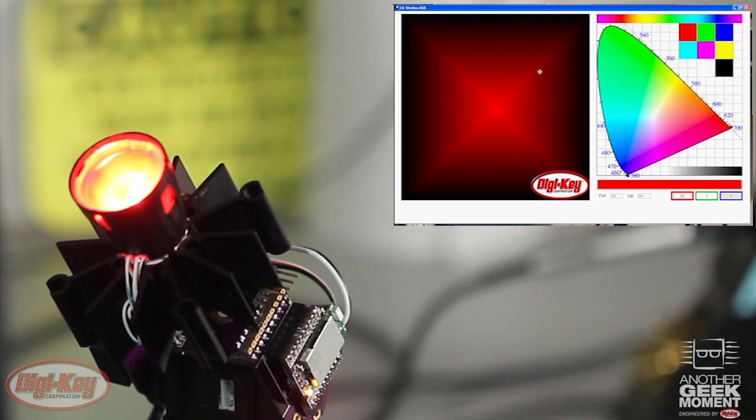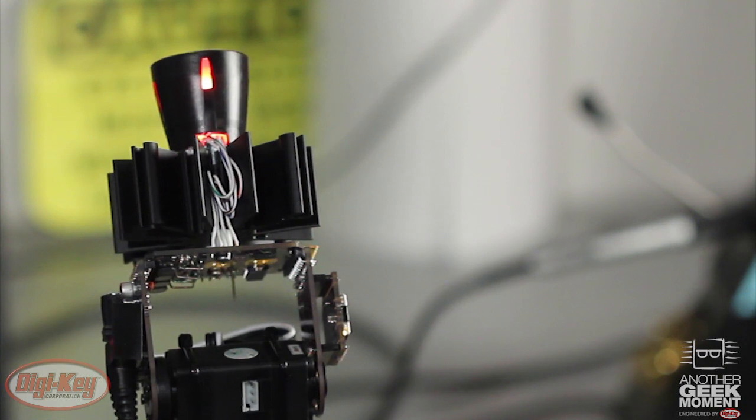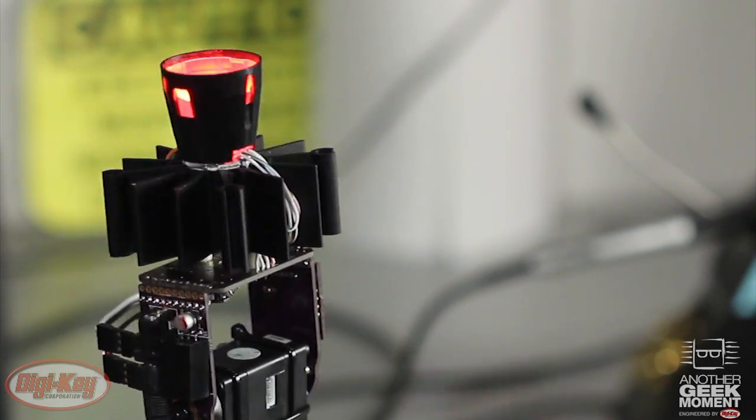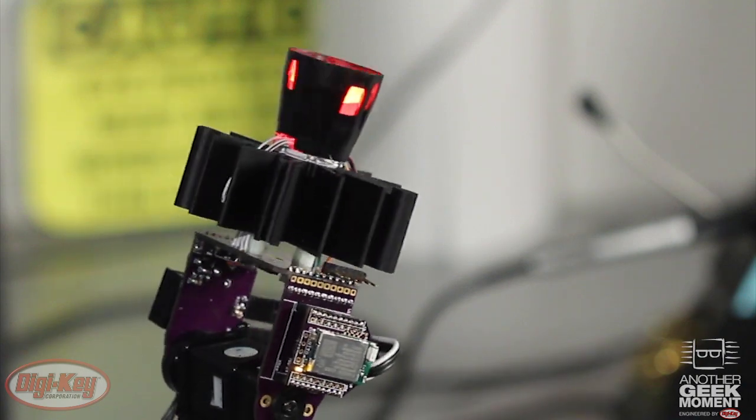Similarly here if I click and drag it will constantly stream packets of data over Bluetooth to the module and update the servo positions allowing me to have constant smooth control of the position of the light.